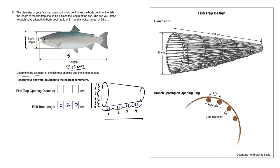Looking at the original fish diagram, we know the ratio is 5 to 1. So if the length is 55 centimeters, the depth is going to be 5 times less: 55 divided by 5 equals 11 centimeters going up and down. We have 6 of these depths fitting into the diameter, so 11 times 6 is 66. The fish trap opening diameter is 66 centimeters.